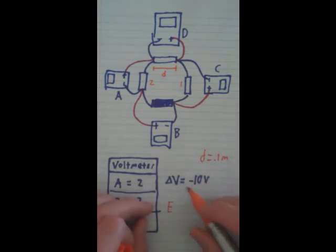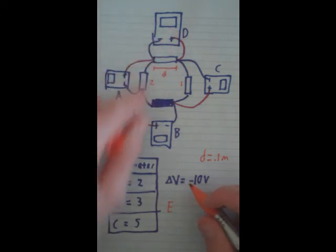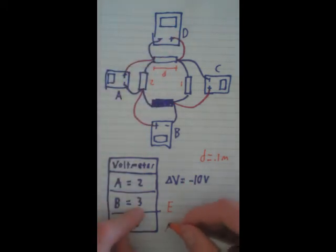So, what do we know about delta V, since this voltmeter is just reading this. We know that delta V equals E times delta L.